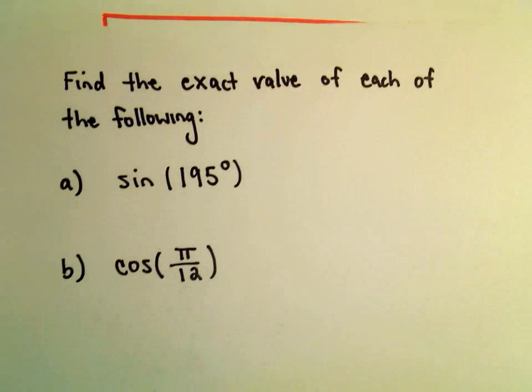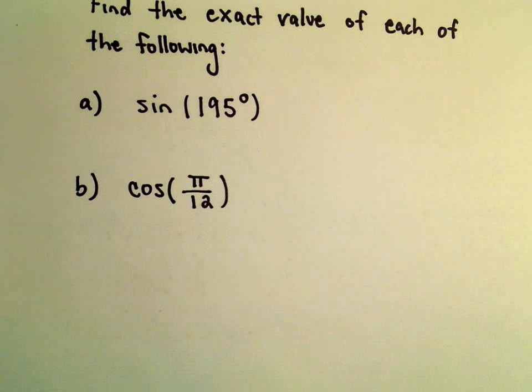Alright, so one more example here using sum and difference identities to evaluate a trig function. And here we're going to find the value for cosine of pi over 12.